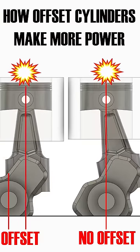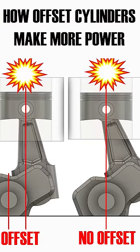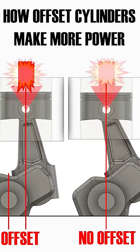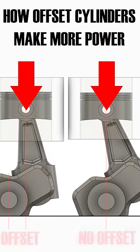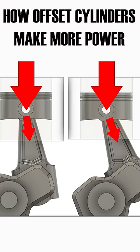We have combustion pressure building inside the chamber, resulting in massive forces pushing down on the piston. The piston is connected to the crankshaft via a connecting rod, which means that the piston also pushes down on the rod, and then the rod pushes down on the crankshaft.